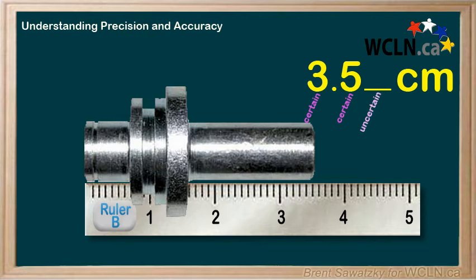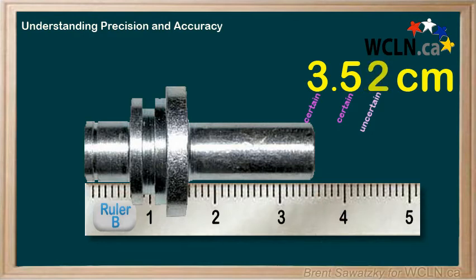We should always have one uncertain digit at the end of our measurement, so let's make an educated guess on the next digit. It looks slightly more than 3.5 — just slightly — so let's guess a 2. It could have been a 1, could be a 2, maybe a 3, but definitely not an 8 or 9. So it's an educated guess — an uncertain digit of 2. If asked how many significant figures we have, we would say 3: two certain digits and one uncertain digit.